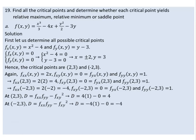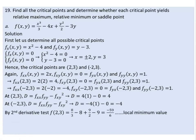Since Fxx is positive at (2, 3), the point (2, 3) is a local minimum. For the point (−2, 3), Fxx equals negative 4. With Fyy equal to 1 and Fxy equal to 0, D equals negative 4, which is negative.